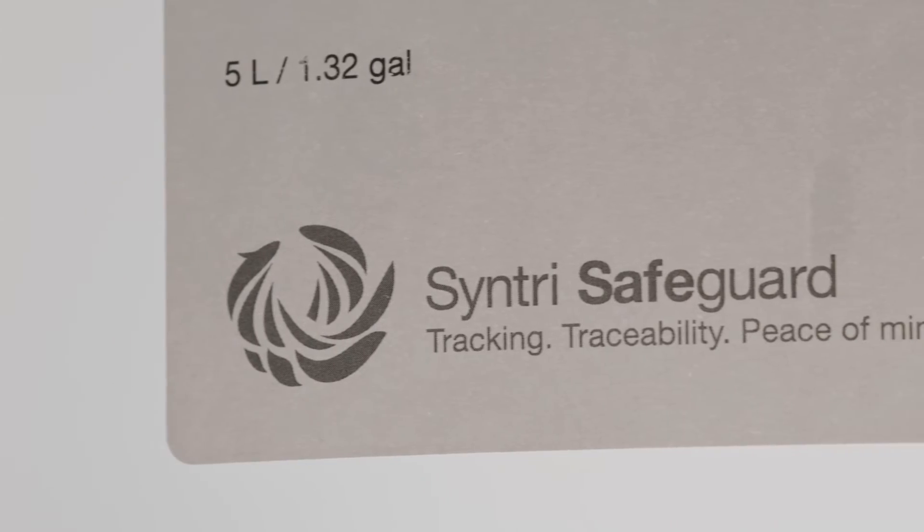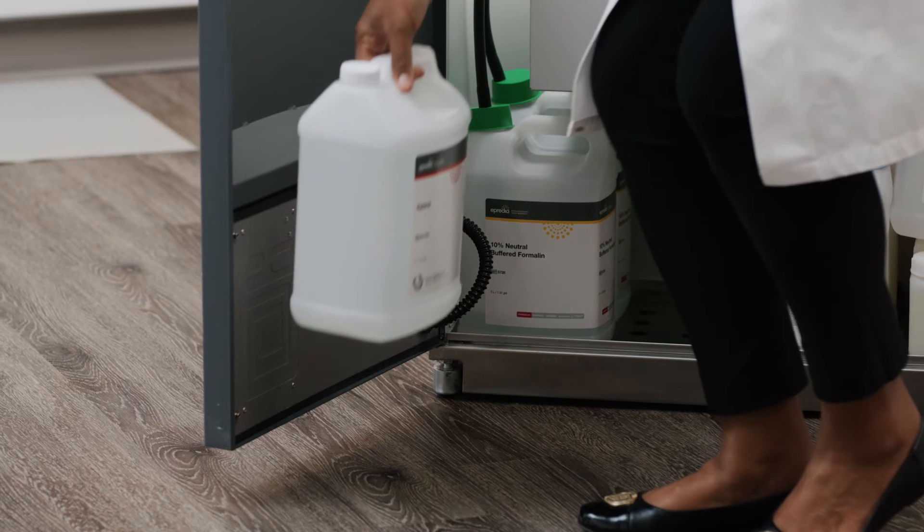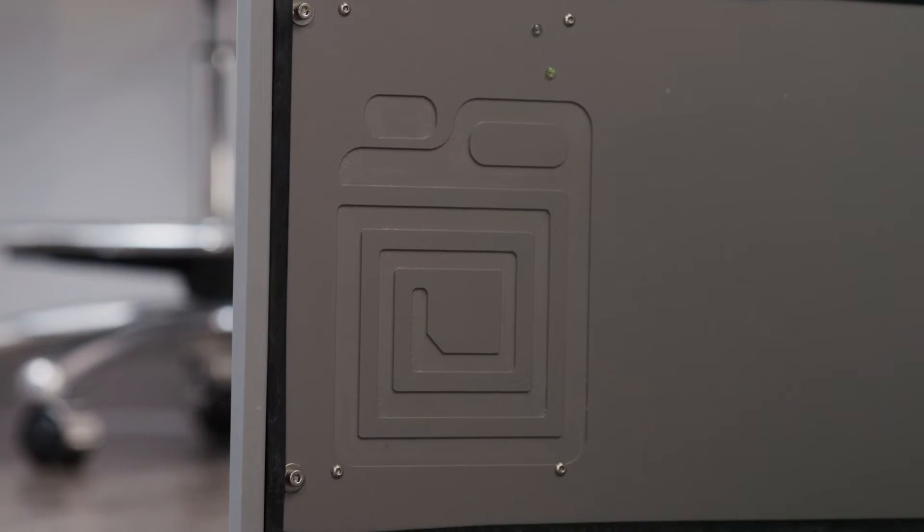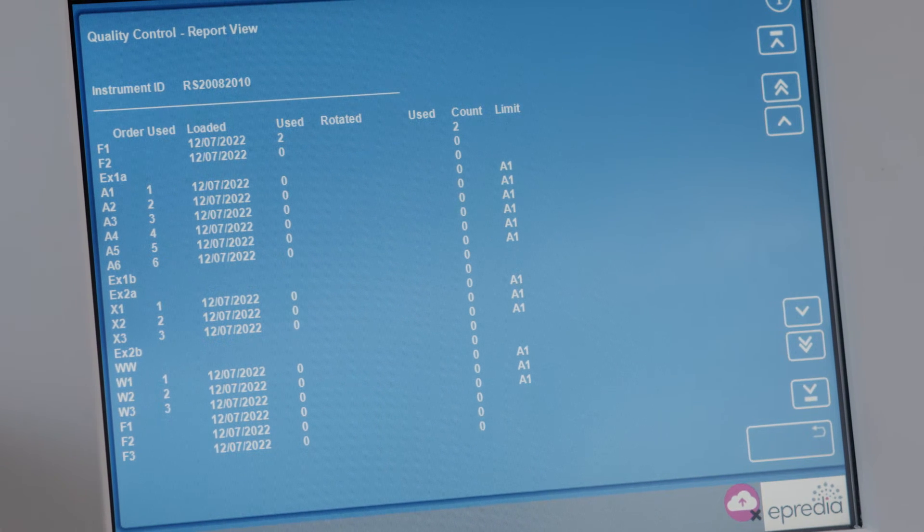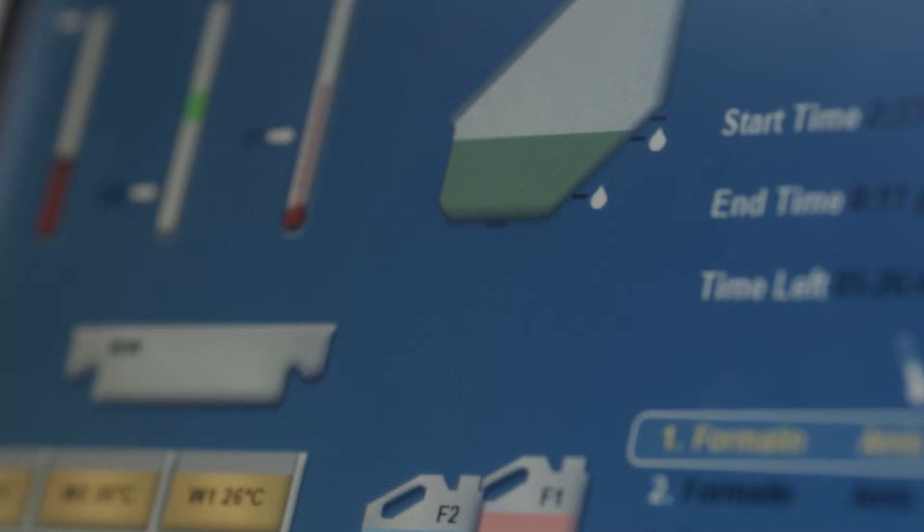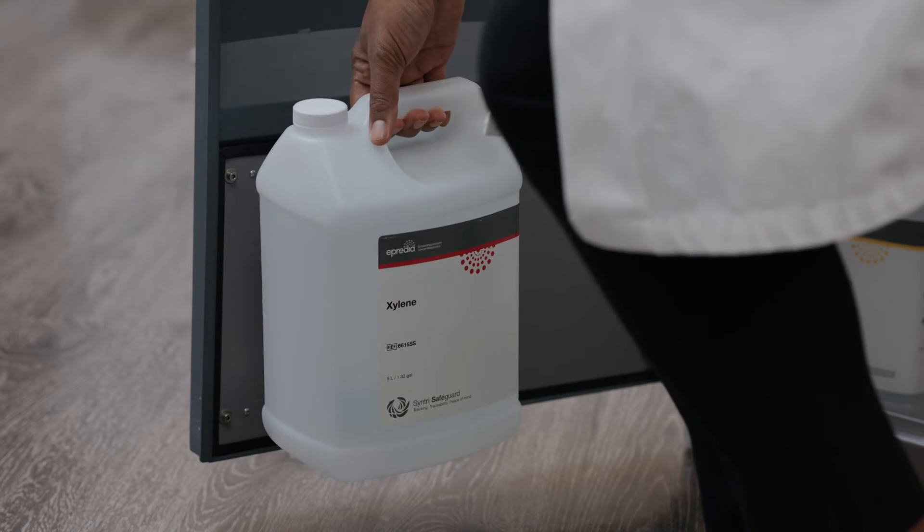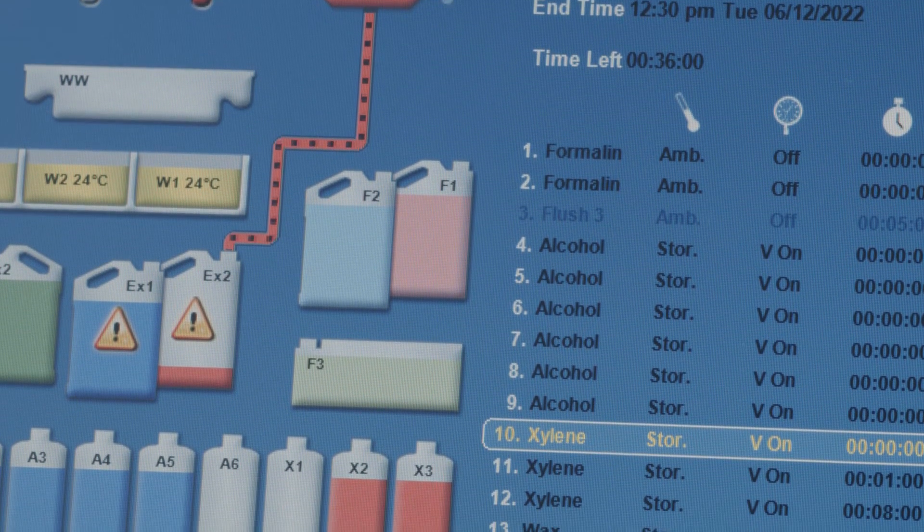When paired with proprietary Apredia RFID Sintry Safeguard reagents, the Revos system tracks and logs reagent exchanges. Sintry Safeguard technology ensures that the correct reagents are exchanged and creates an exchange log, documenting the reagent type, lot number, and expiration date. The Revos system helps ensure proper reagent replenishment, tracking every bottle loaded, protocol executed, and service performed for operational excellence.